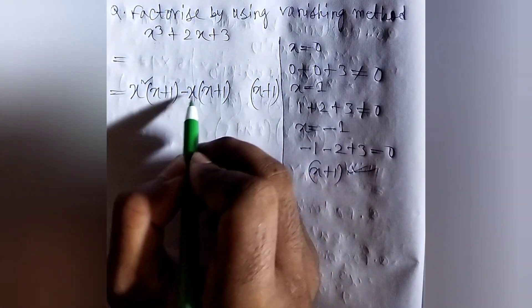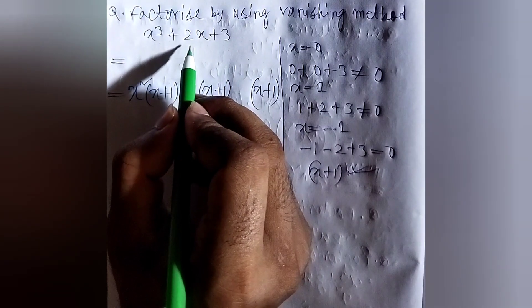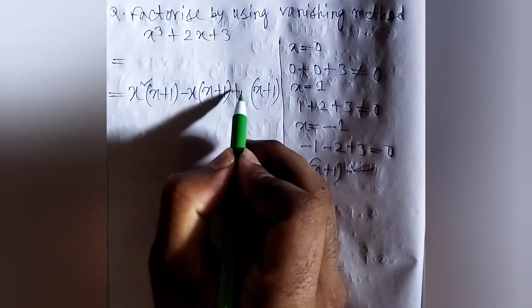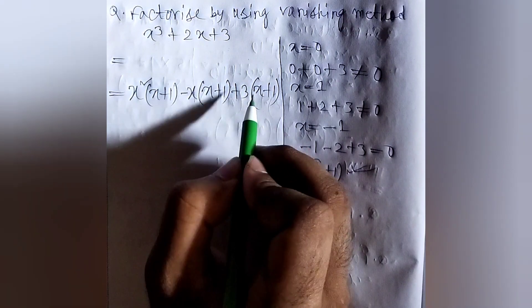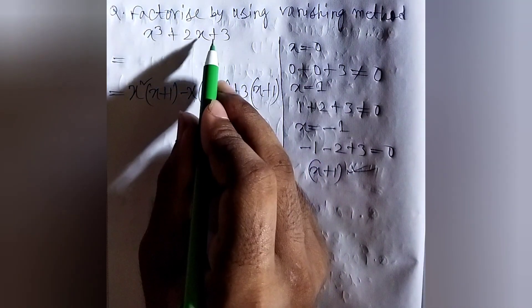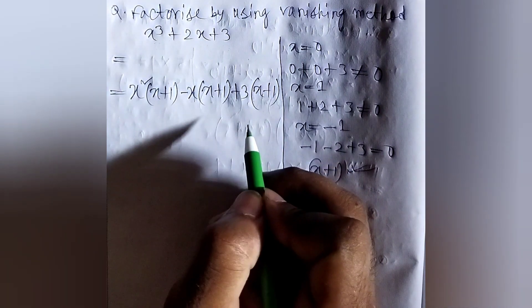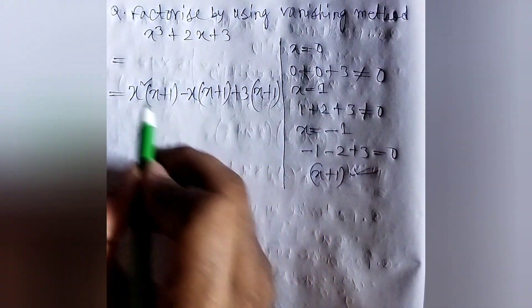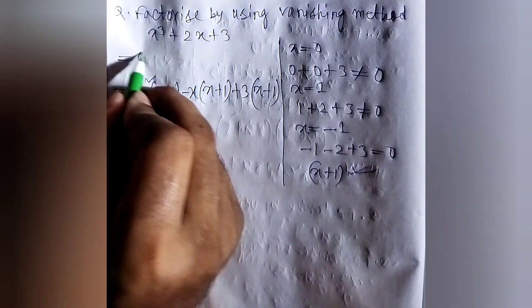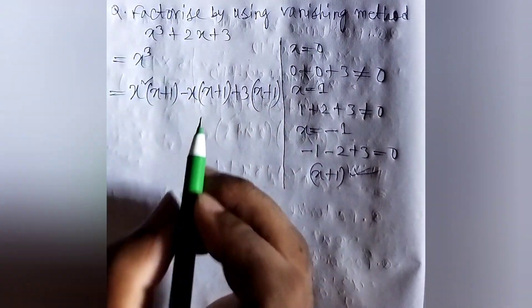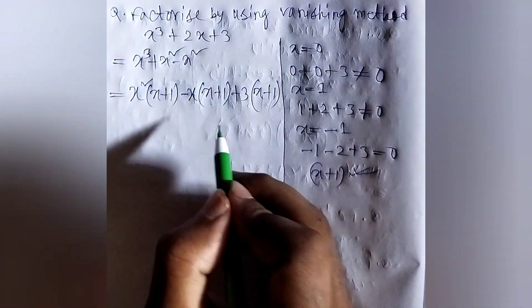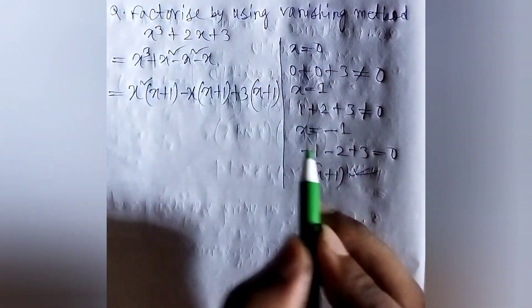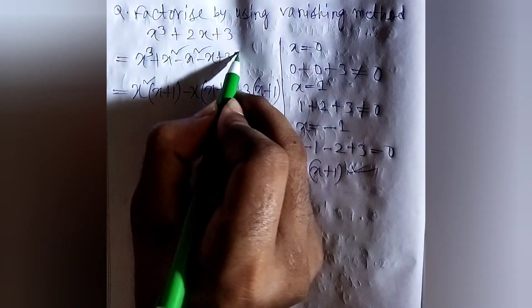After that, it will be minus x. But here is 2x. So, if we take plus 3 here, it will become 3x. So, minus x plus 3x will become plus 2x. Here is plus 3, so there is plus 3. So, just multiply this: x cube plus x squared minus x squared minus x plus 3x plus 3.